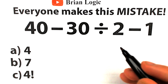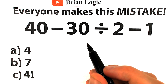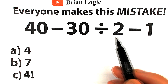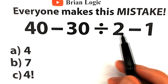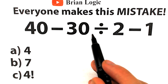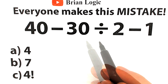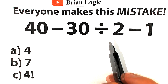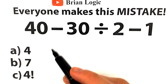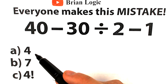Hello everyone and welcome back to my channel BrainLogic. Really interesting challenge today. We have 40 minus 30 divided by 2 minus 1. This looks like a regular expression — we don't have any complicated expression with square roots. So right now let's check our skills and check our answers at the end of the video. Pause the video and try to solve it by yourself.